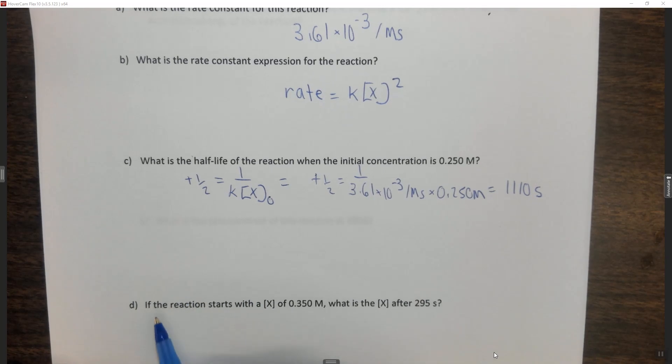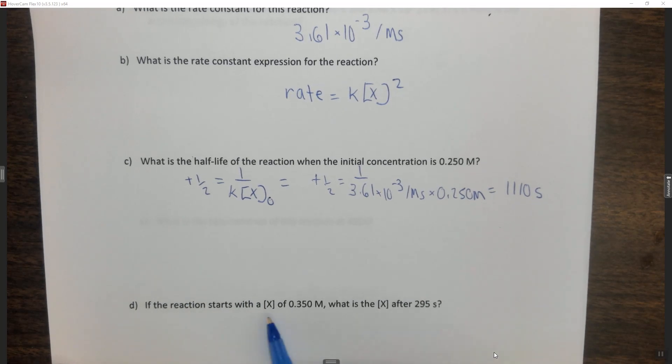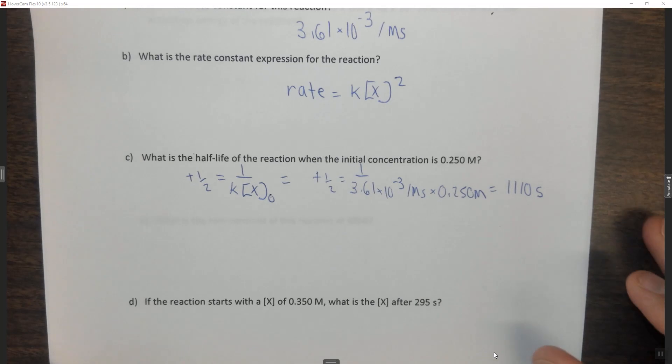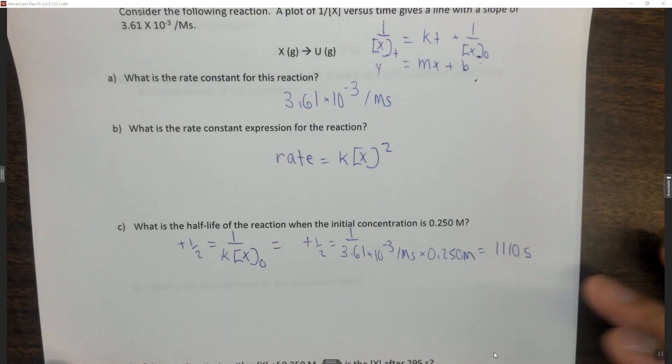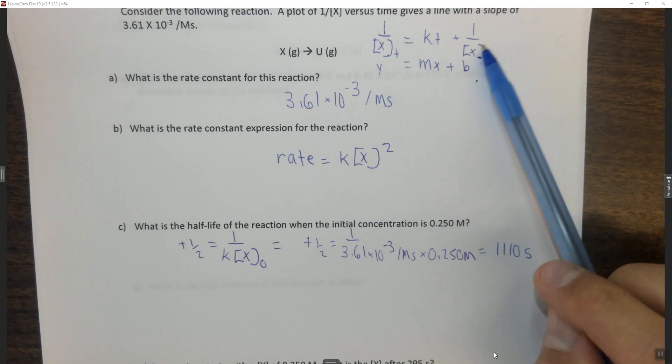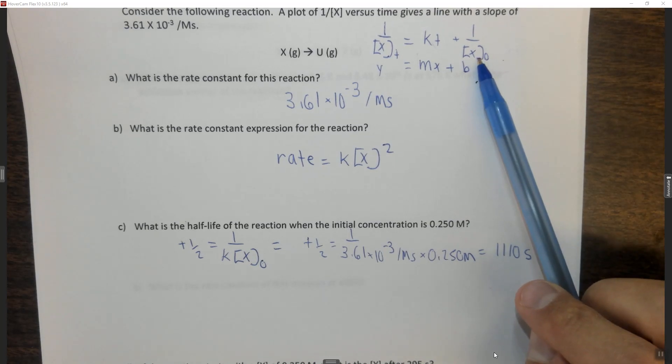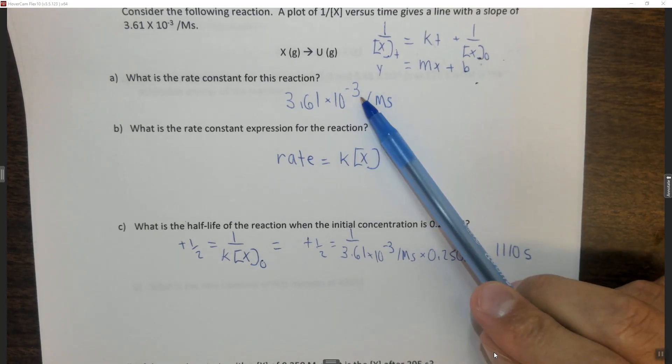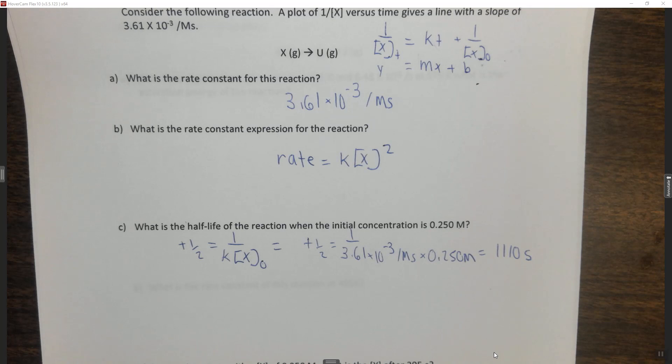The question says if the reaction starts with a concentration of X of 0.350 molar, what is the concentration of X after 295 seconds? So if you've already watched A through C, you saw that we came up with the second-order integrated rate law and we found k. So this is basically what we need to use.